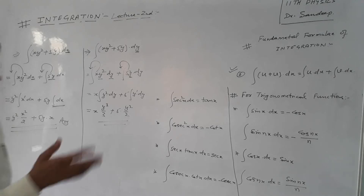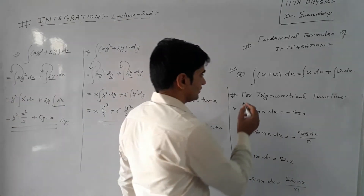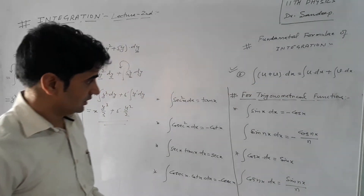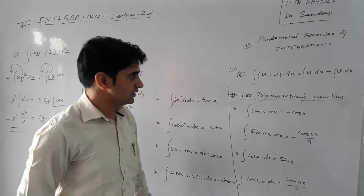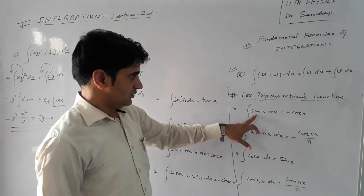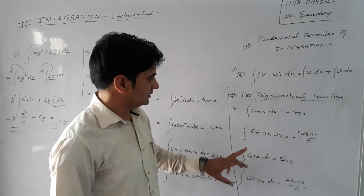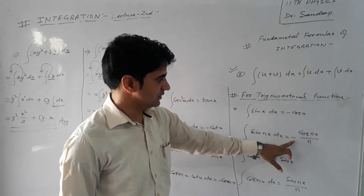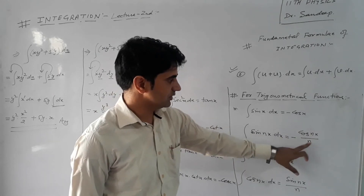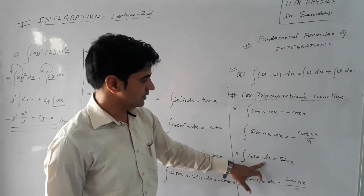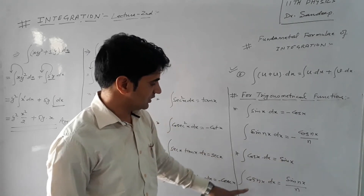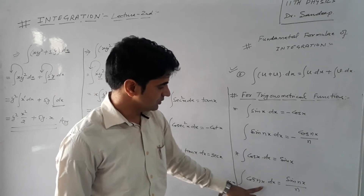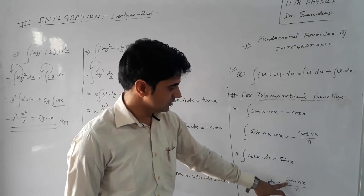For the trigonometric functions — just as in differentiation, if we have some identity, then we have integration identities. The integral of sin x into dx equals minus cos x. For sin nx into dx, where n equals 2x or 5x, the solution would be minus cos 5x by 5. For cos x into dx, the solution is equal to sin x. If we have cos nx dx, then the integral of cos nx equals sin nx by n.